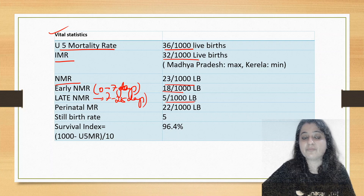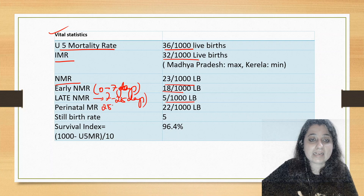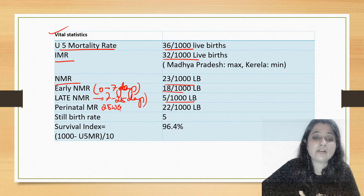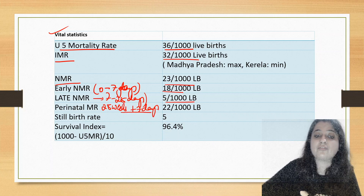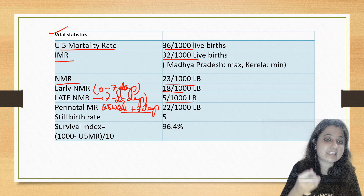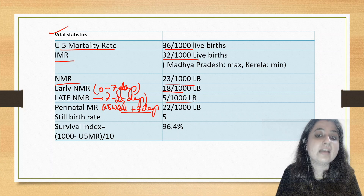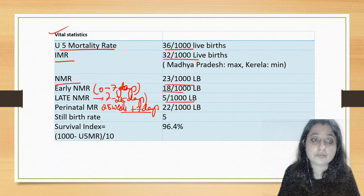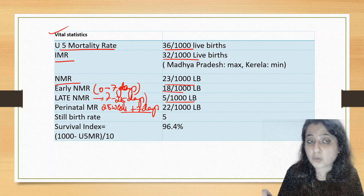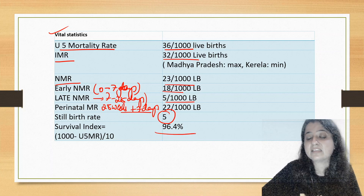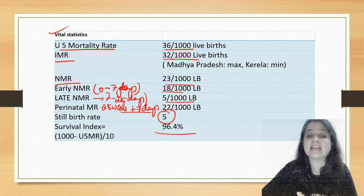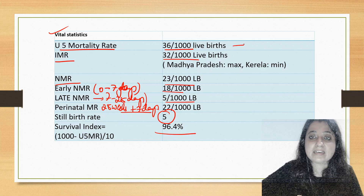Perinatal mortality rate — from 28 weeks gestation to the first 7 days of life — is 22 per 1000 live births. Still birth rate is 5, and the survival index is currently 96.4. Under-5 mortality at 36 is an important MCQ value.